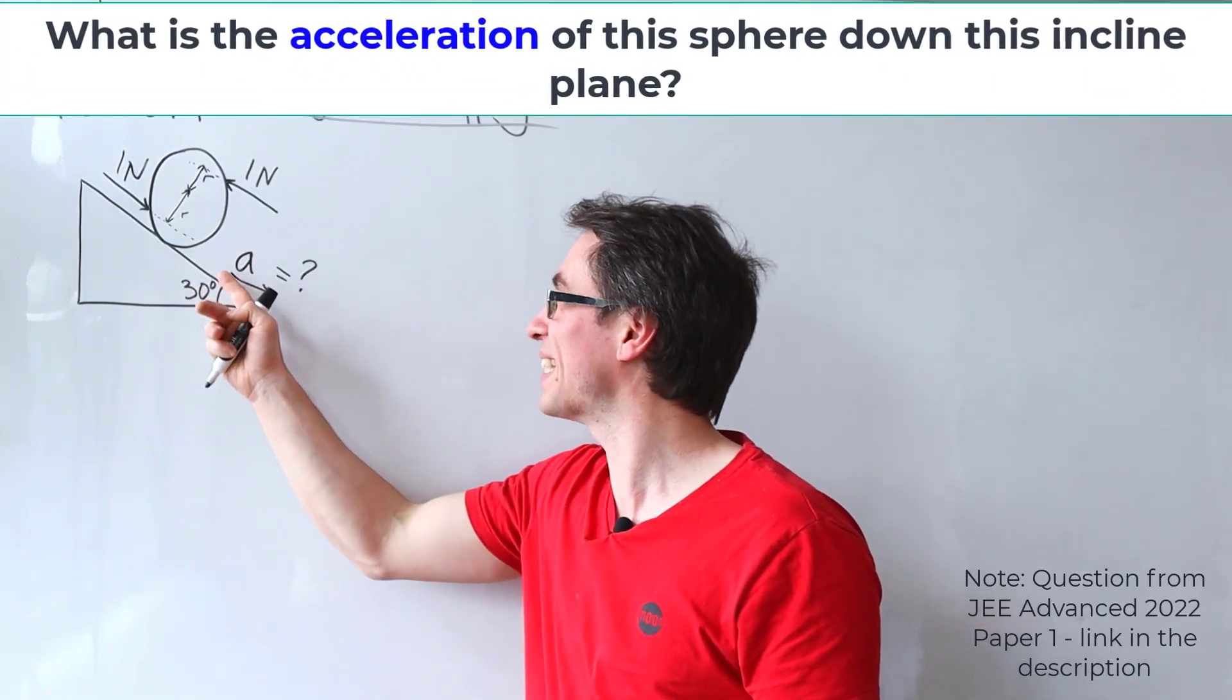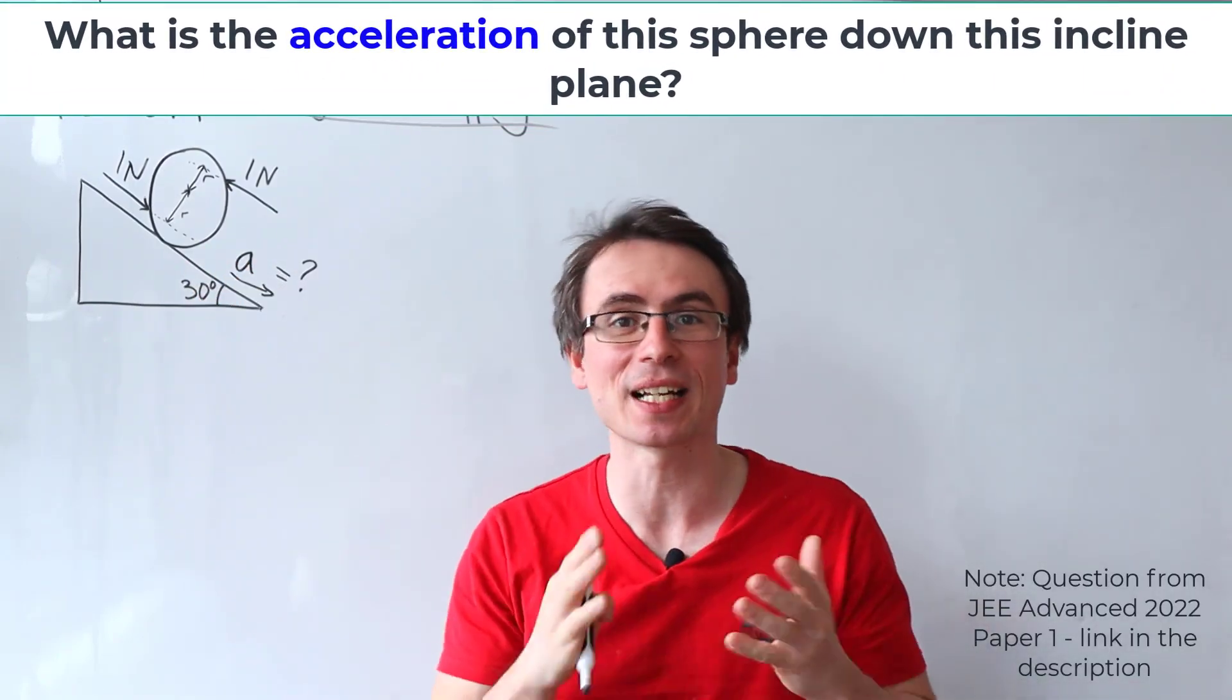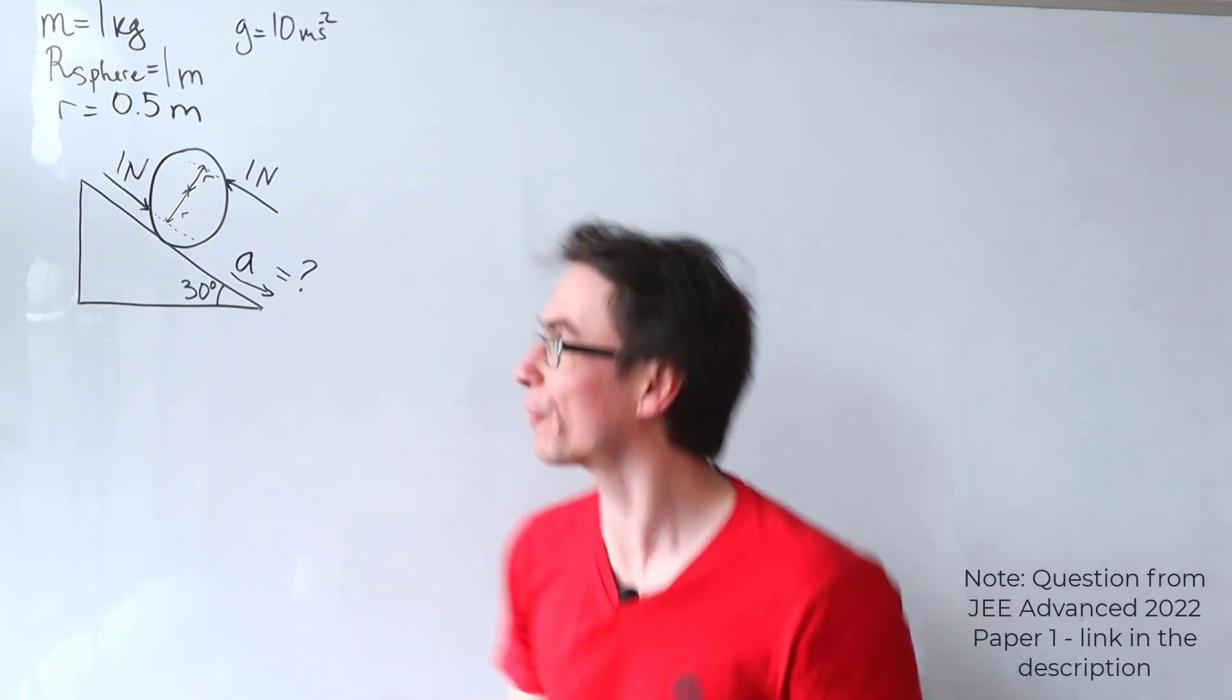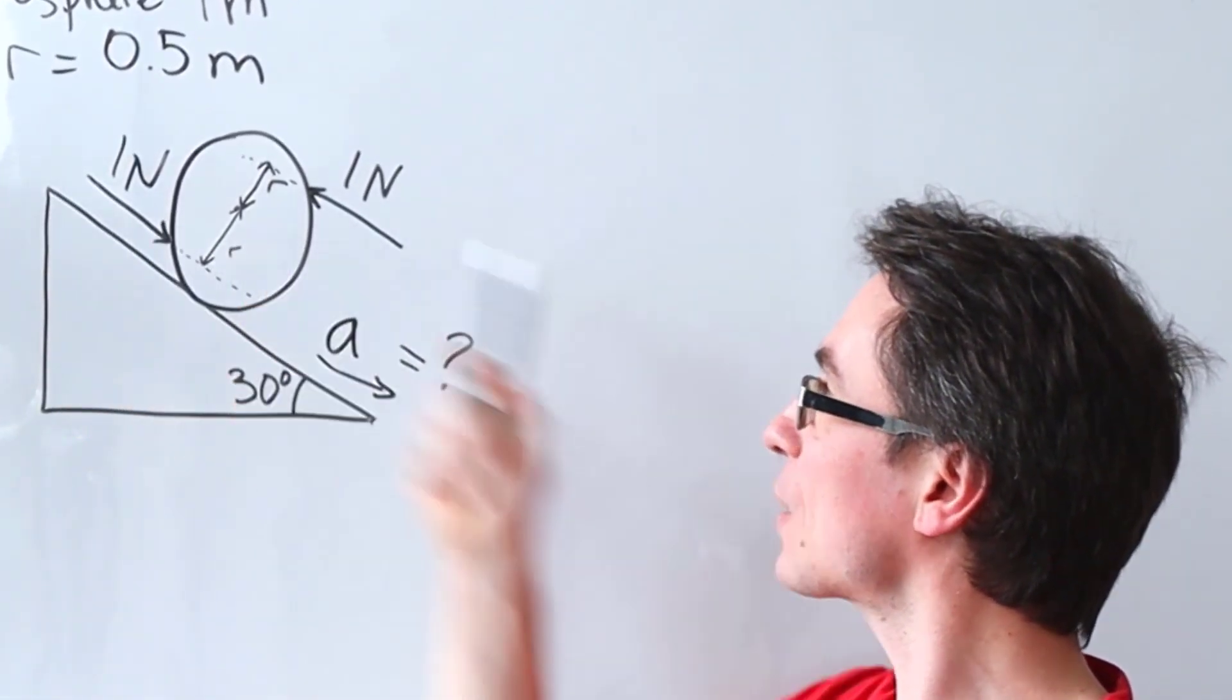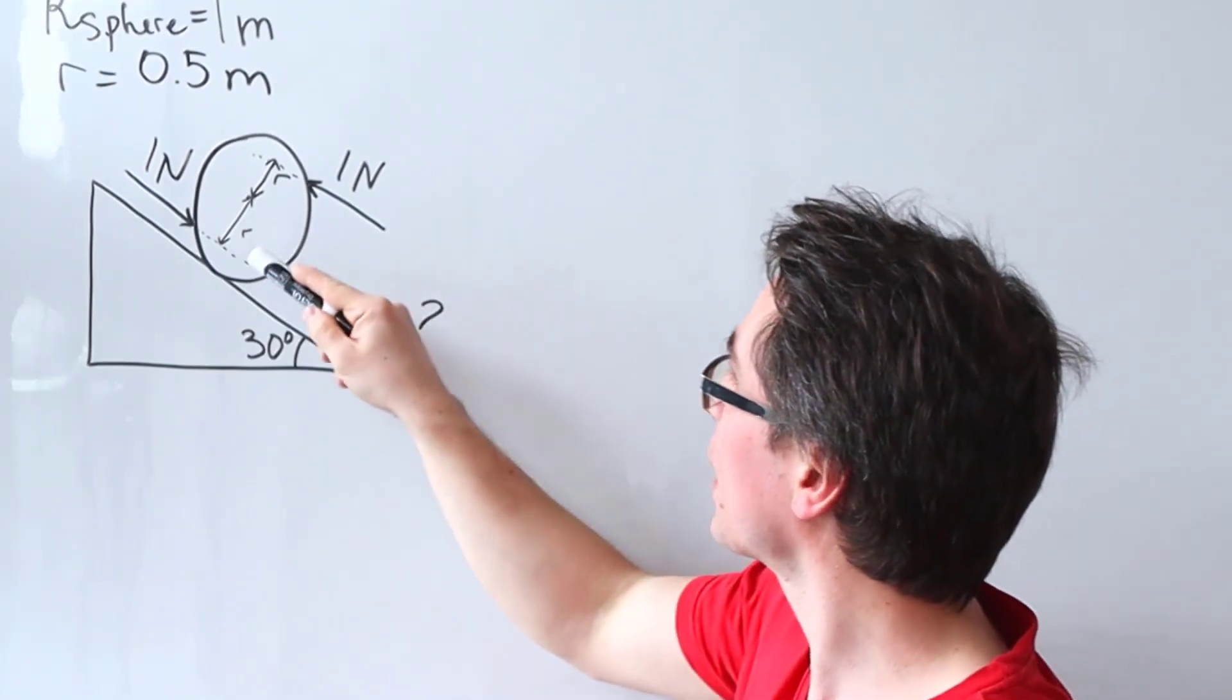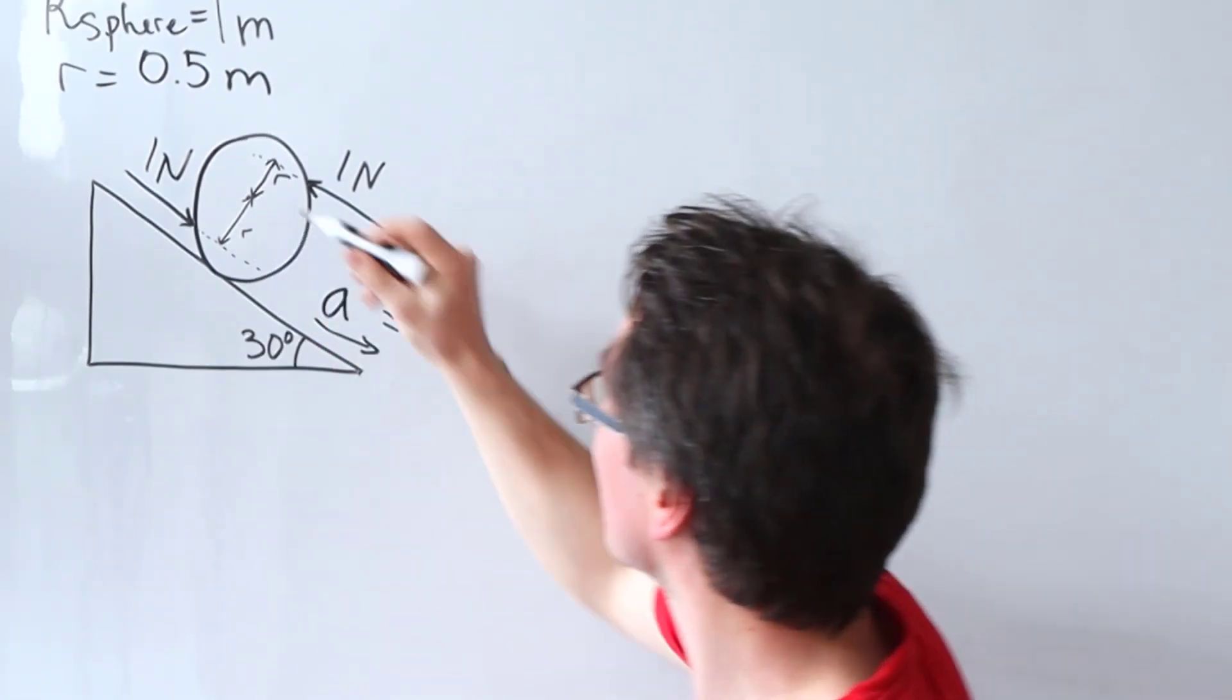What is the acceleration of this sphere down the inclined plane? Other than the force of gravity, we also have two forces that are acting this way and their line of action is a distance R from the center.